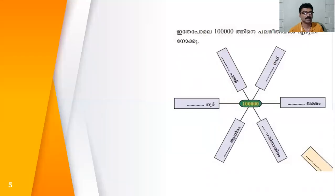If you write 1,000,000 — 1,000,000 is also 100,000. How many people write?